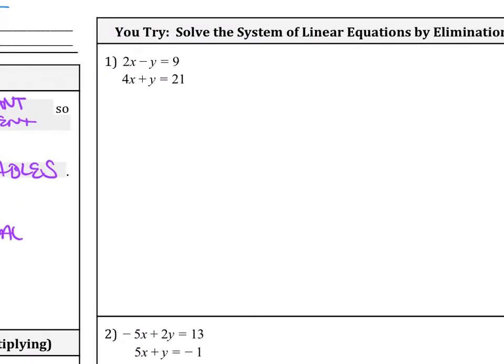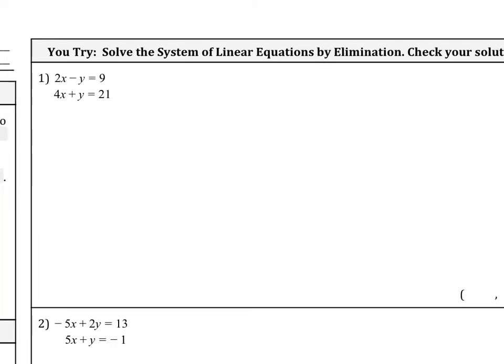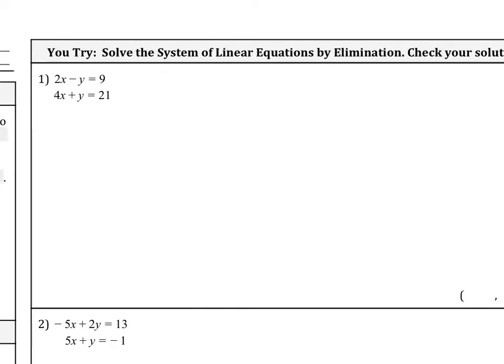So what I want you to do is go ahead and try this example here: 2x minus y equals 9 and 4x plus y equals 21. Notice that you can eliminate something right away. You are able to eliminate the y's right away. So that cancels out. Go ahead and finish this out, and when you come back I'll have the answer for you.